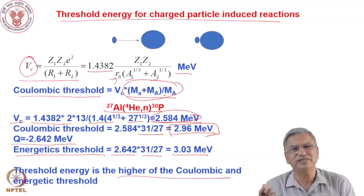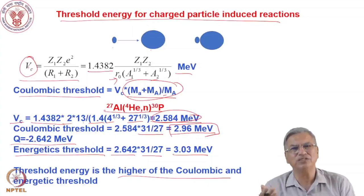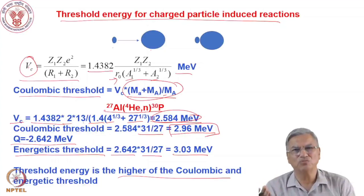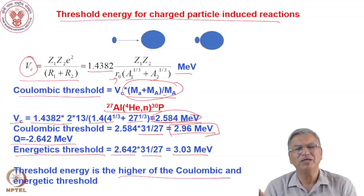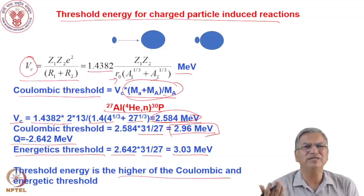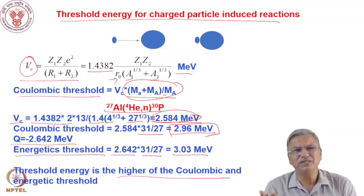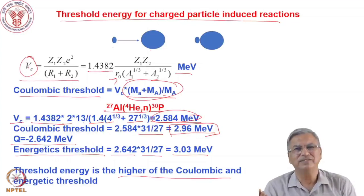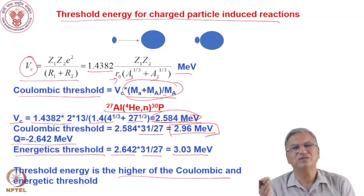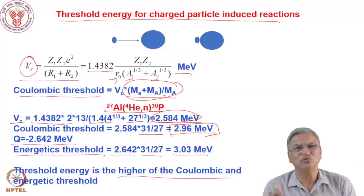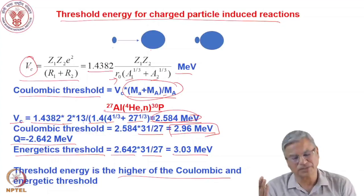Today we discussed the energetics of nuclear reactions: Q values, endoergic versus exoergic reactions, and the threshold energy. For endoergic reactions there is a minimum energy to overcome; for charged particle reactions, the Coulomb barrier must also be crossed. The energy available in the center of mass ECM is the useful fraction for inducing the reaction, and the laboratory threshold is higher than the CM threshold by a factor (M1 + M2)/M2. In the next lecture we will discuss the cross sections of nuclear reactions. Thank you.